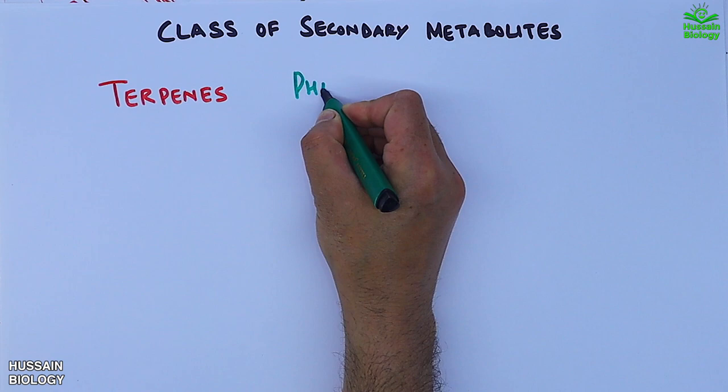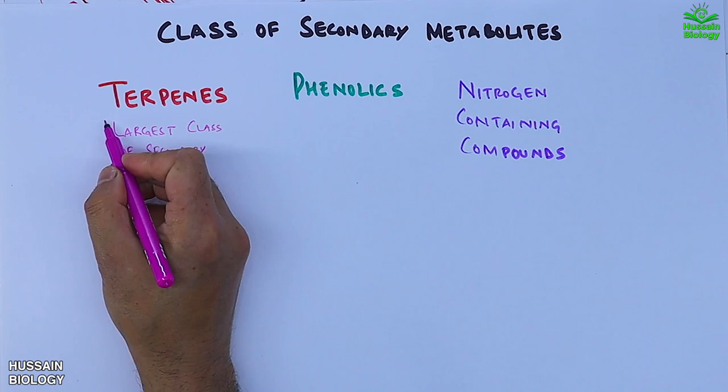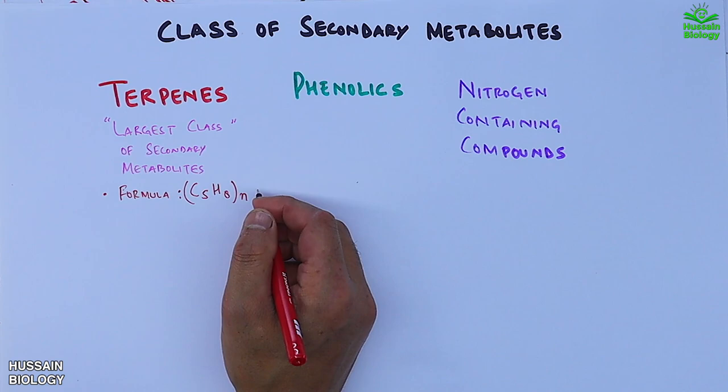First, let's see the class of secondary metabolites. We have terpenes, phenolics and nitrogen-containing compounds. The terpenes are the largest class of secondary metabolites, having standard formula as C5H8N where N is greater or equal to 2. The terpenes are mostly found in conifers.